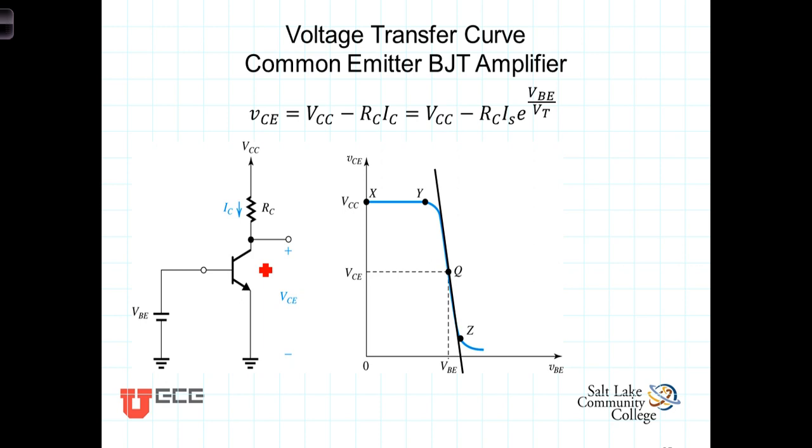This is the voltage transfer characteristic for the BJT. It consists of a region before the base to emitter voltage is great enough, and we have VBE along here and VCE along this axis here. In this amplifier configuration, we're going to define the output voltage as the voltage at the collector relative to the emitter. In this case, the emitter is grounded.